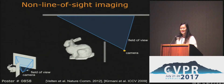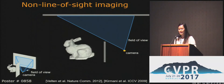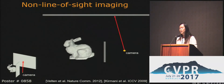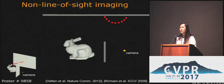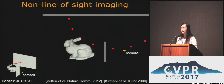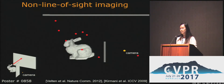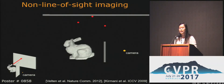It turns out to be possible. Sounds like magic, right? But let's look at how light travels in the scene. We first shine light on the visible wall. Photons will scatter diffusely, and some of the photons will interact with the bunny and scatter again. Some of those photons will scatter again at the wall and eventually reach the camera.